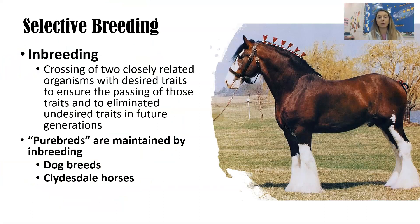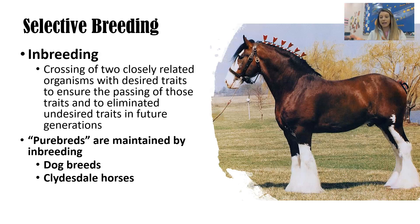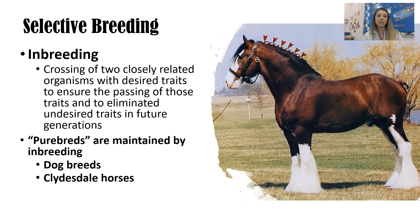The other type of selective breeding is inbreeding, where you cross two very closely related organisms that have the desired traits already, in order to ensure that all offspring have those traits in future generations. Purebreds — purebred dogs, Clydesdales for example — are all a result of inbreeding. But again, that can come with consequences. We have purebred dogs that have been inbred for so long, and with that breed comes skin problems, certain types of cancers, hearing problems, or vision problems.